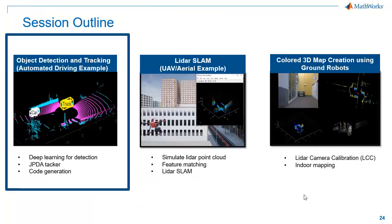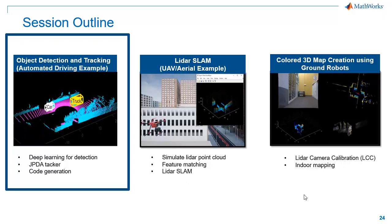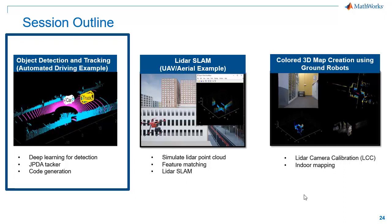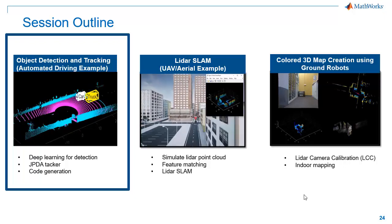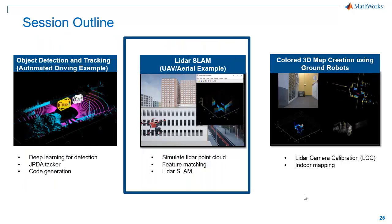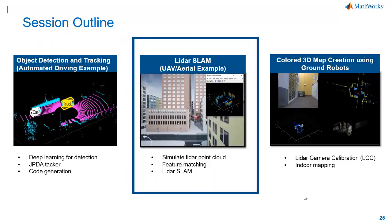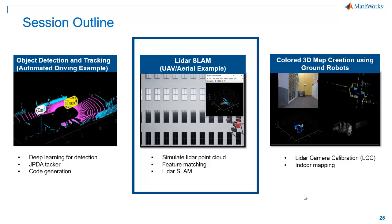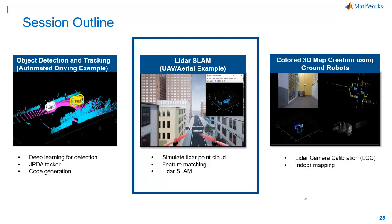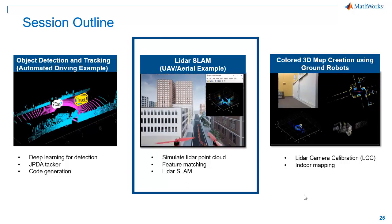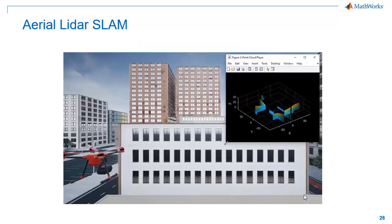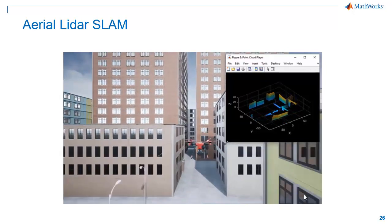So we have demonstrated how to build a MATLAB system for object detection and tracking for autonomous driving applications. If you have any questions regarding this, feel free to ask them in the Q&A section at the end of this webinar. We'll now move on to the next example which is Aerial LiDAR SLAM. Here we'll implement simultaneous localization and mapping or SLAM on point cloud data streamed from a LiDAR sensor which is mounted on a UAV.